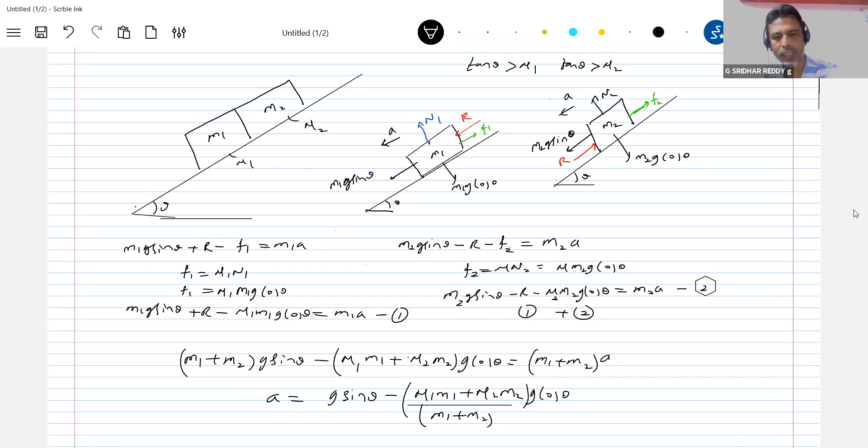Okay now what about the reaction? Substitute this value of a in any one equation, you'll get the expression for the reaction. I'll directly write it, the reaction will be, or sorry, the normal contact between them. Substituting this equation 3 in 1, so what I do next is put 3 in 1, then solving for r, r is equal to (mu2 minus mu1) m1 m2 g cos theta by (m1 plus m2).